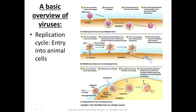The other way for enveloped viruses is very similar to non-enveloped - it causes endocytosis where it takes it into a vesicle. In this case, the envelope around the virus will fuse with the membrane of the endosome. You can see how it's fused together, and that creates the opening so that the nucleic acid can get out - although it also may need to come out of the capsid as well.